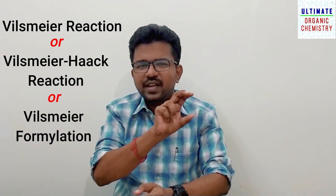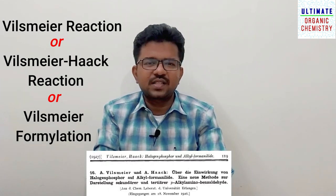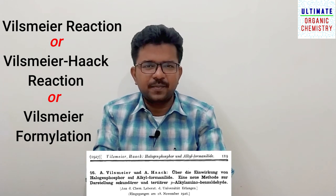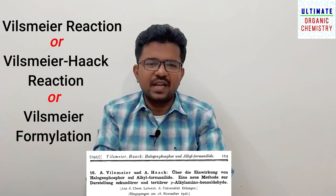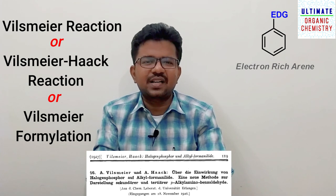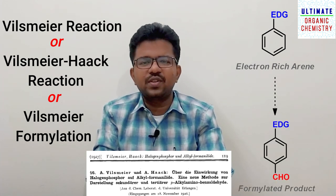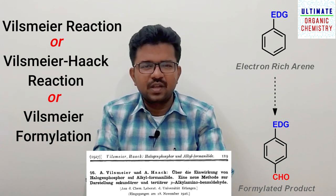In this video we are going to discuss a new naming reaction — the Vilsmeier reaction, otherwise known as the Vilsmeier-Haack reaction, or the Vilsmeier formylation reaction. All three names represent the same reaction. The Vilsmeier reaction was reported in the year 1927 by Vilsmeier and Haack, and it involves the reaction of arenes that are generally electron-rich in nature to undergo formylation to produce the corresponding aldehydes.